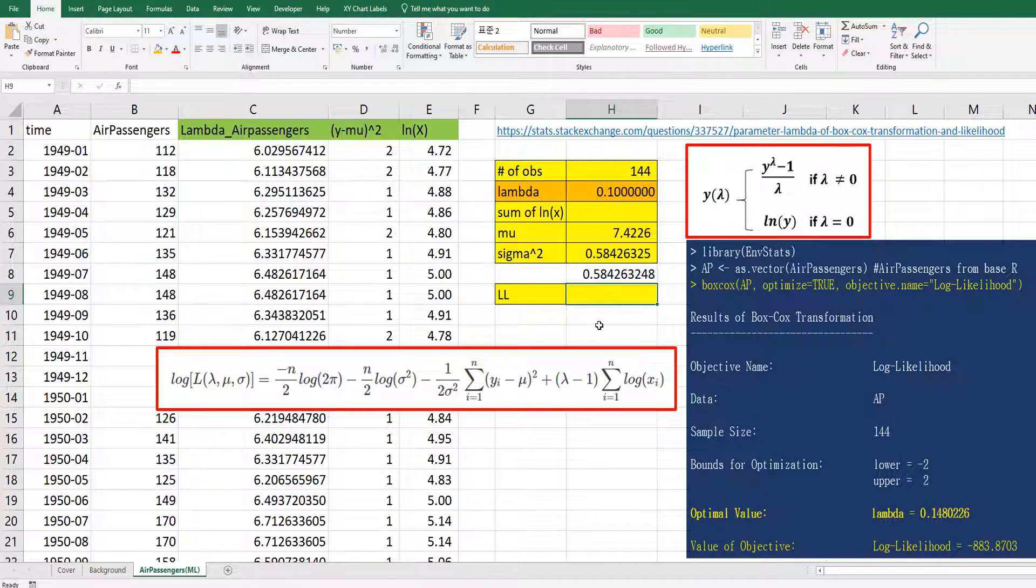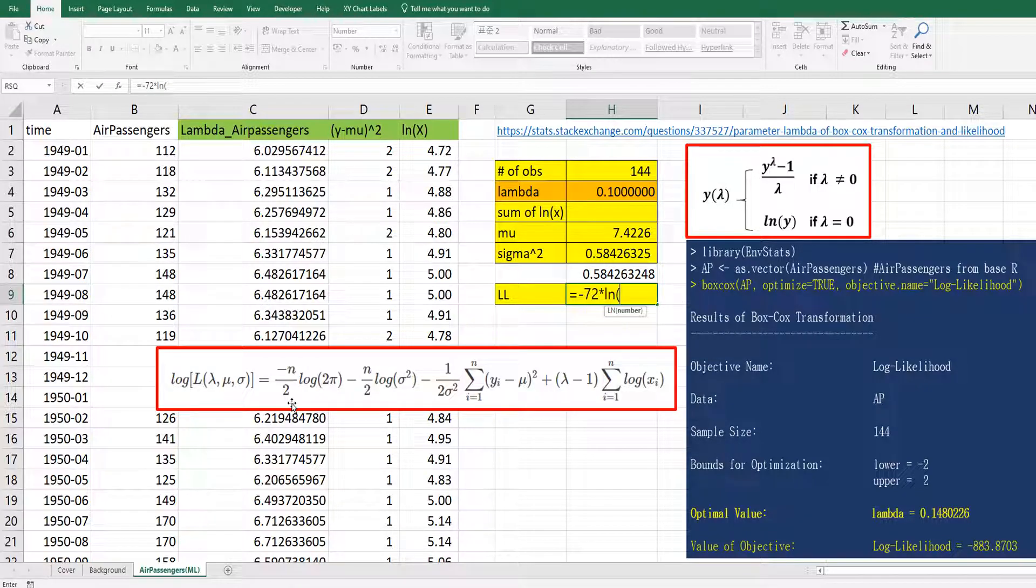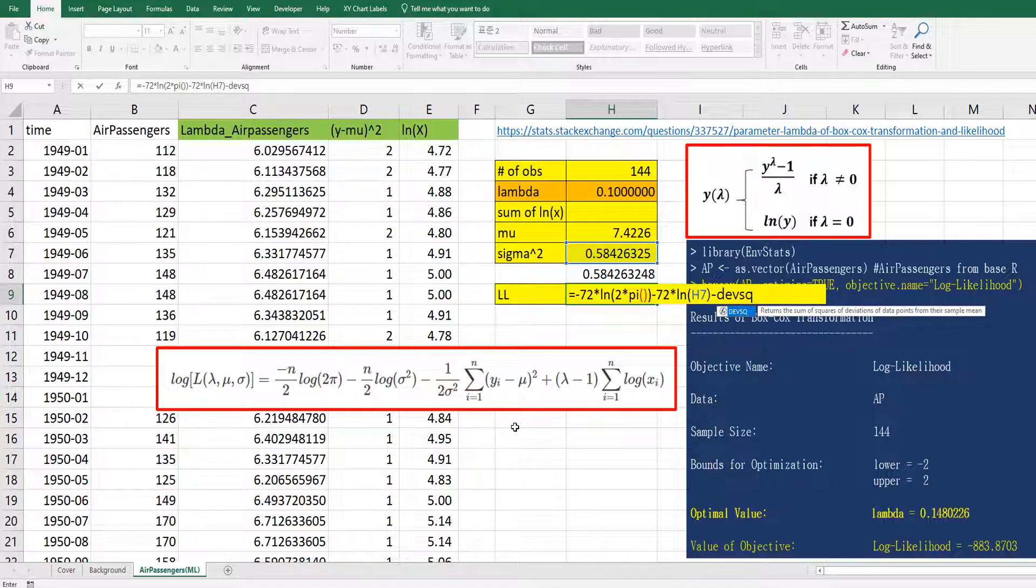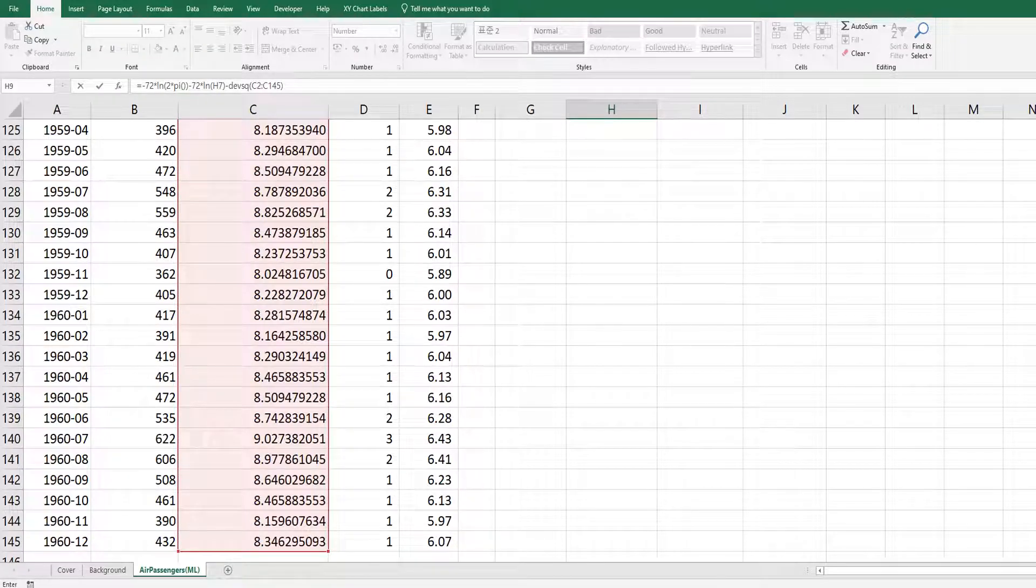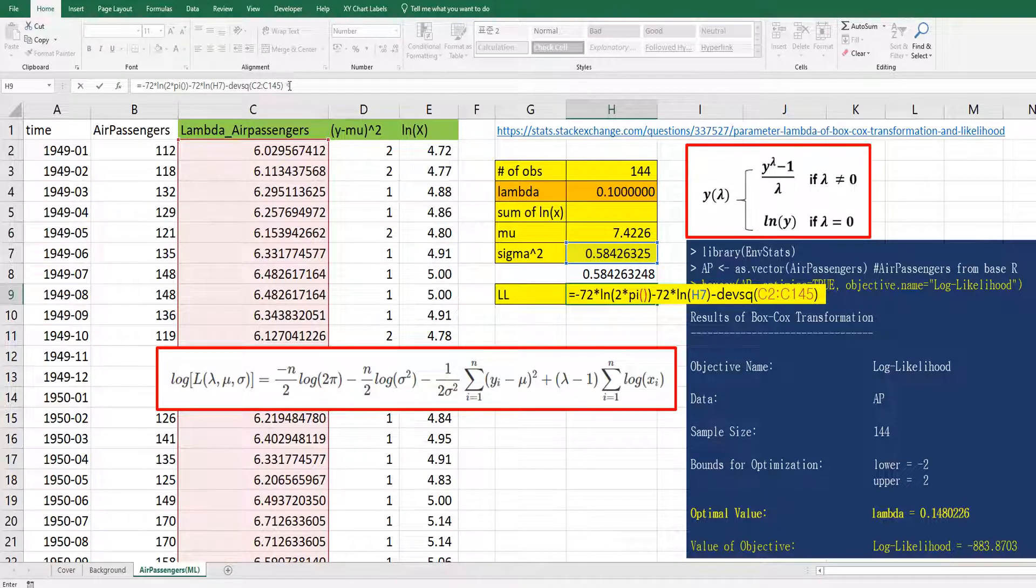So log likelihood can be calculated by using this formula. So minus 72 because 144 over 2, times log of 2 times pi minus 72 times log of sigma squared minus this one. So devsq over 2 times sigma squared plus lambda minus 1 times sum of log x.